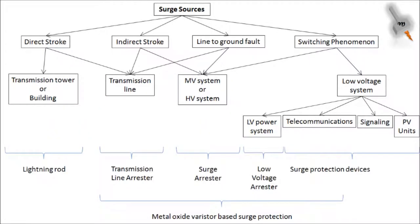Now that we know the sources of surges, let's see the possible means through which different types of surges can be diverted to earth. Direct lightning strokes can be handled by lightning rods — which are not actually lightning arresters, although sometimes referred to as such. Lightning rods along with good grounding can effectively handle direct lightning strokes. Another important consideration is insulation coordination, which involves selecting insulators in a manner so they don't flash over and induce voltage in the transmission lines.